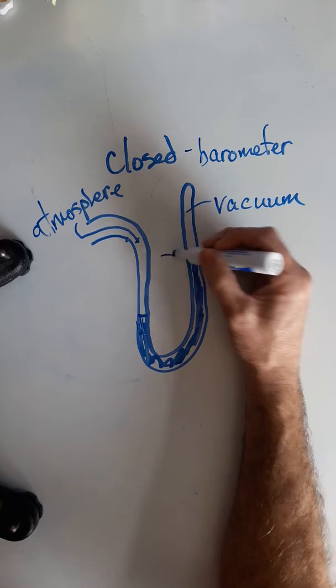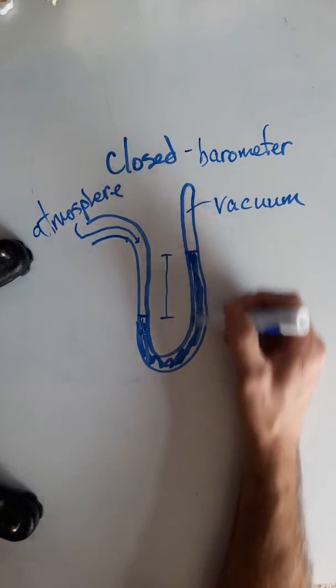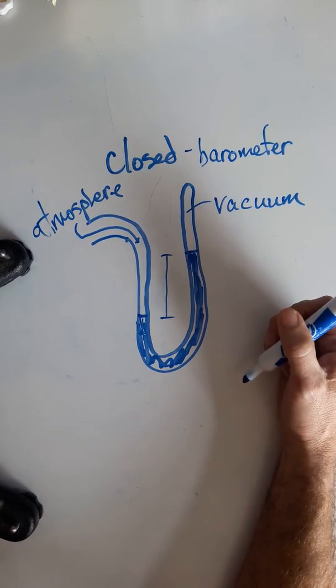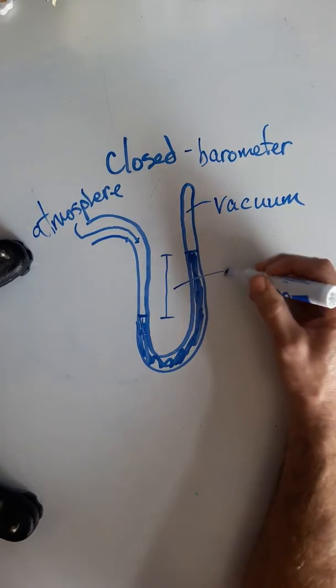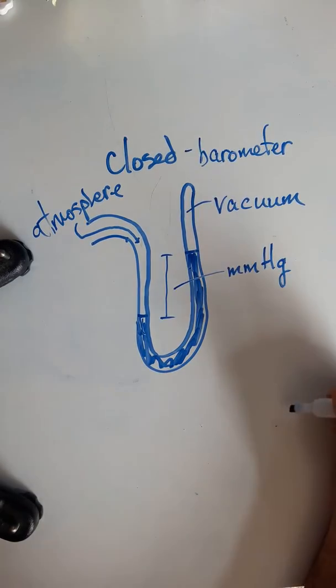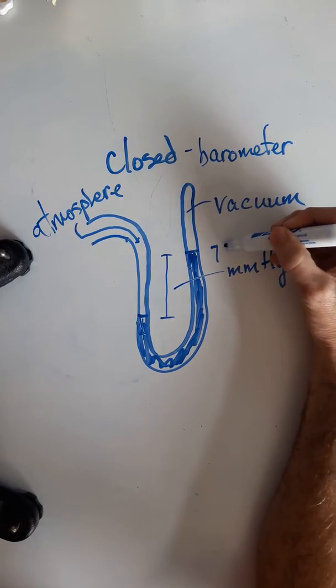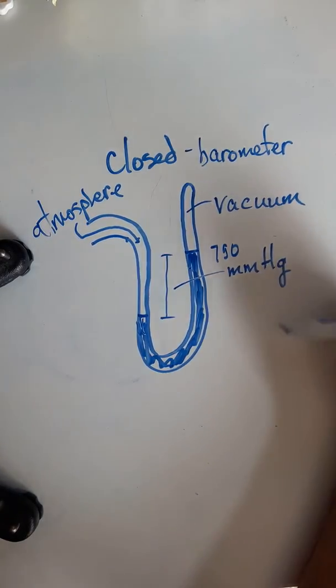As always, measuring this height difference in between the two levels of mercury in the u-tube, usually in millimeters. You can do it in any, but this would be called the millimeters of mercury. If the difference was 750 millimeters, that would be the atmospheric pressure at that time.